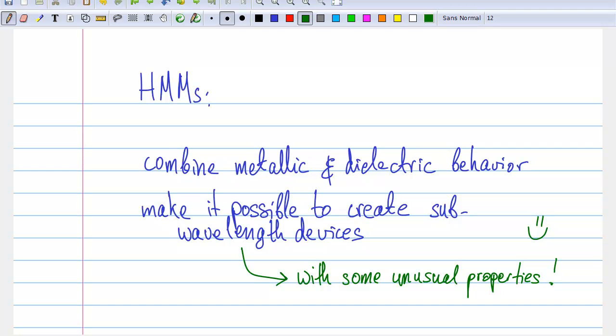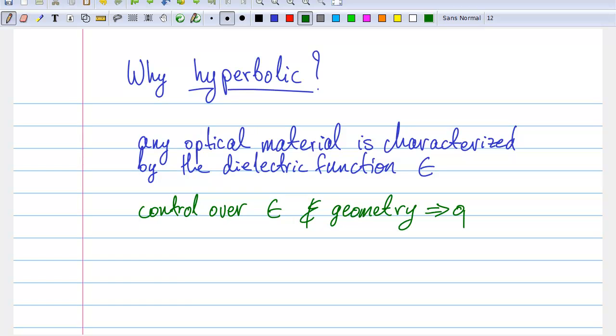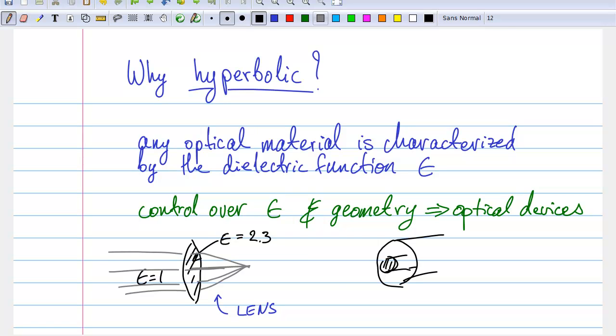So why are they called hyperbolic? Well the name comes from how we describe such materials mathematically. All optical materials are characterized by their dielectric function, which we denote by epsilon. And every optical device in existence works by combining materials with different values of epsilon and guiding light through them. That dielectric function tells us how the fields inside the material change in response to the light wave that is passing through.